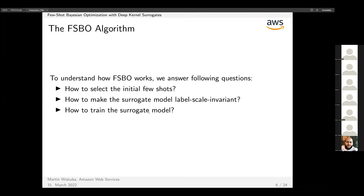What are the components we still need to discuss before understanding how the whole method works? It's a few-shot method, so we must select some initial few shots. Then we addressed how we can make our surrogate model label-scale invariant. Typically you don't really care about what the actual scores are for different parameters, but rather their ranking.